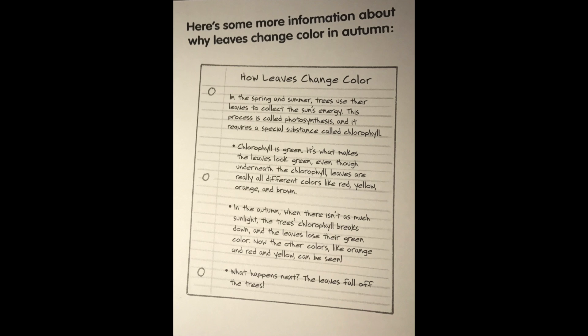In the autumn, when there isn't as much sunlight, the tree's chlorophyll breaks down and the leaves lose their green colour. Now the other colours, like orange and red and yellow, can be seen. What happens next? The leaves fall off the trees.